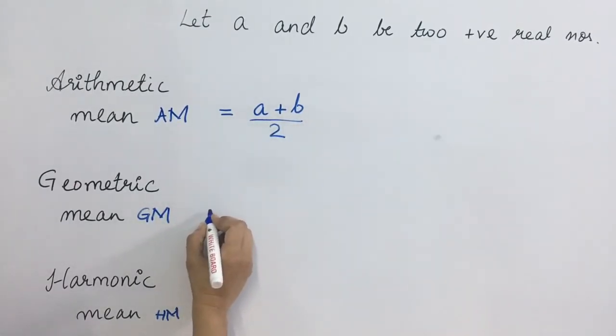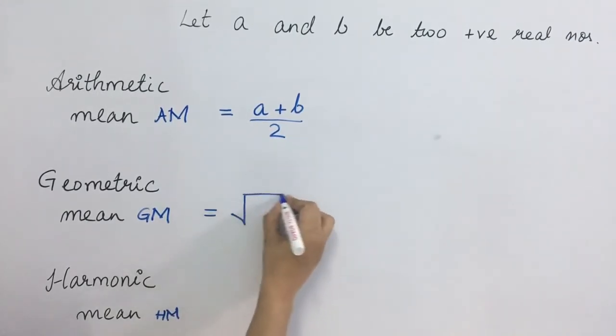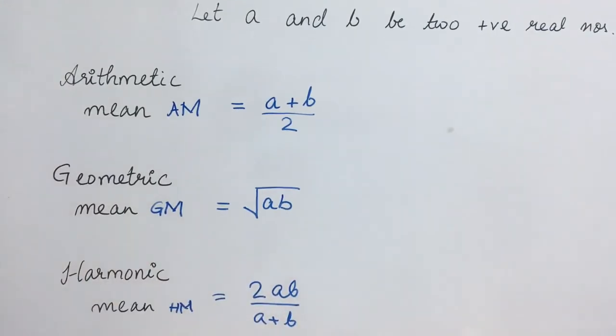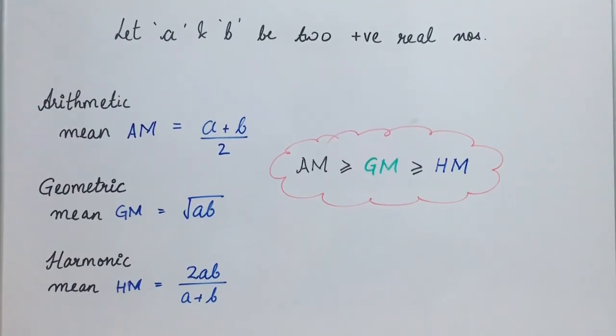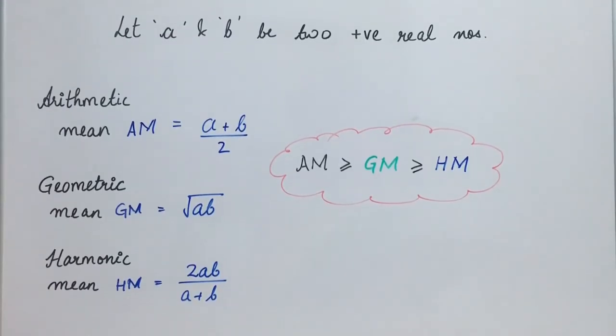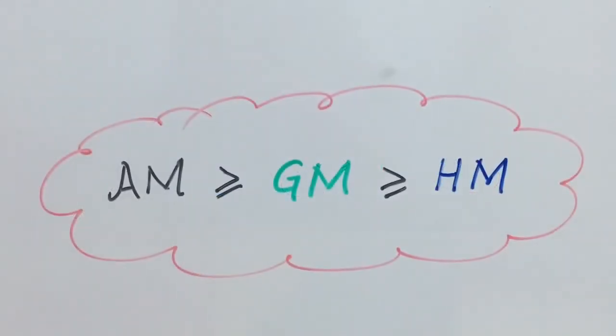Arithmetic mean. Geometric mean, this is equal to square root of the two numbers. And third is harmonic mean. This is equal to 2 times of AB upon A plus B. This is the harmonic mean. And the relation between the three means is the arithmetic mean is always greater than the geometric mean and geometric mean is always greater than harmonic mean. So this is your relation between the three means.